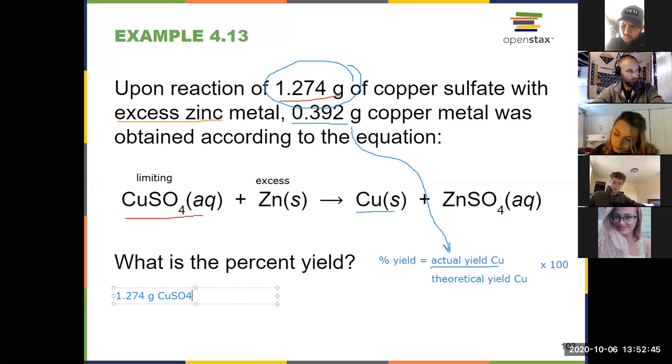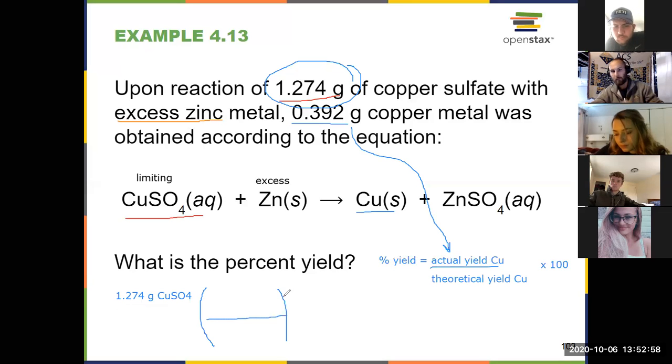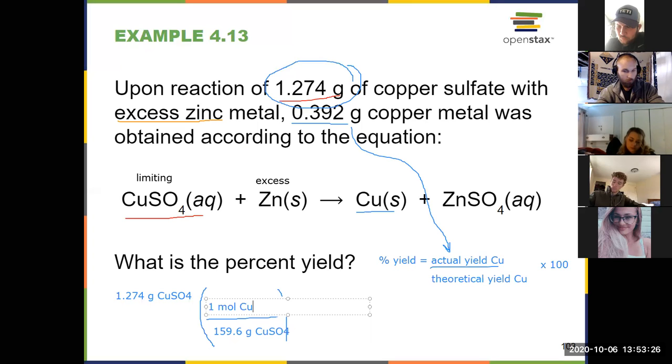And as I mentioned just a minute ago, that 0.392 I'm given, that's the actual yield of copper that's going to go into my calculation. But I need the theoretical yield of copper, and that has to come from the only other number I'm given, 1.274 grams of copper sulfate. So I start with that, 1.274 grams of copper sulfate. And I think to myself, can I convert that to grams of copper? Well, I can't go directly. You can never go straight from grams to grams, right? That's what stoichiometry is all about. You always have to go to moles first. But I know how to do that. That's an old Chapter 3 type problem. I use the formula mass of copper sulfate, which I would have to calculate from the periodic table, adding one copper, one sulfur, and four oxygens together. That'll take me to moles of copper sulfate.